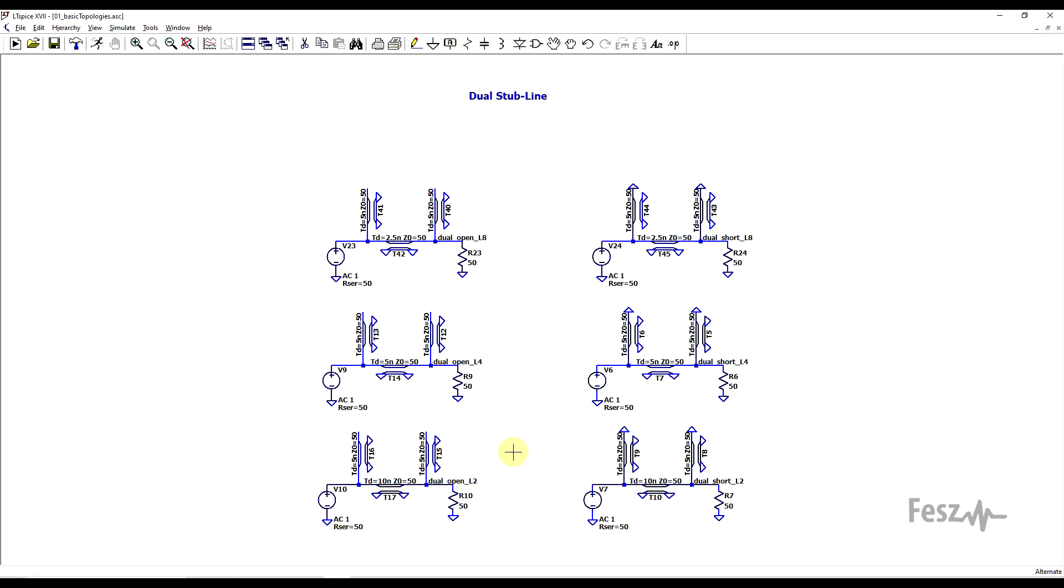Now the last thing to look at is how a higher-order filter can be built. For this, we will need stubs of the same electrical length, separated by a specific amount of extra transmission line. The interesting thing I found was that the exact length will have an impact on the final response shape. So just as an example, I added two stubs, 50 ohms 5 nanosecond long in all cases, but the stubs are separated by an eighth of a wavelength, quarter wavelength, and half a wavelength transmission line, each length giving a different response.